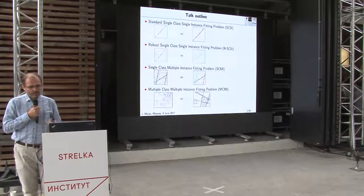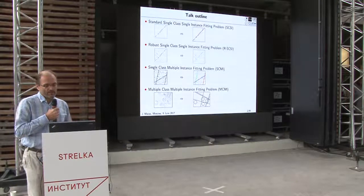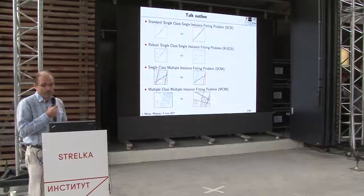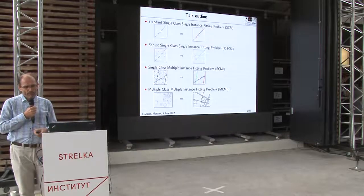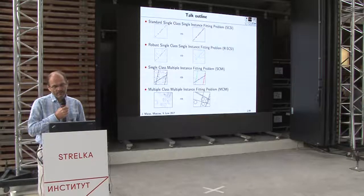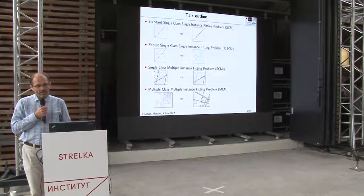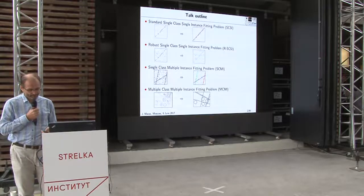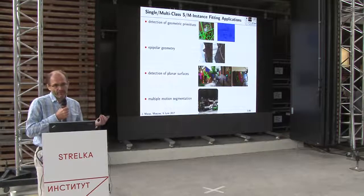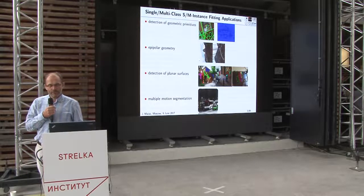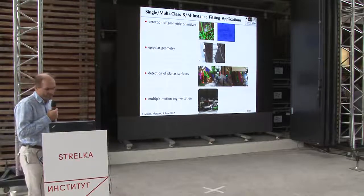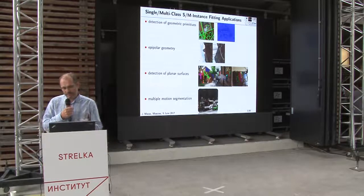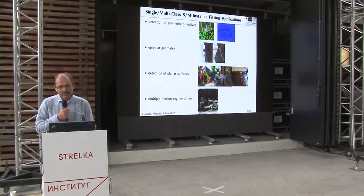The most complex form is the multi-class multi-instance fitting problem, where the data includes instances of multiple classes of objects. Here the classes would be lines — infinite lines — and circles of arbitrary radius. The problem is to interpret the data as a set of circles and straight lines. Many real-world problems can be formalized as single-class single-instance, multi-class single-instance, and many other versions of these problems.